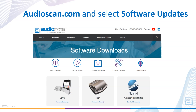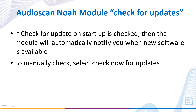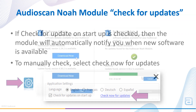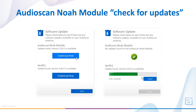As always, the no-charge software update is available for download at audioscan.com. Software updates can also be done directly from the Audioscan NOA module by selecting Settings and clicking Check Now for Updates. Note that a checkmark beside Check for Updates on Startup means you will be notified when new software versions are available. If an update is found, select Download and then Install.